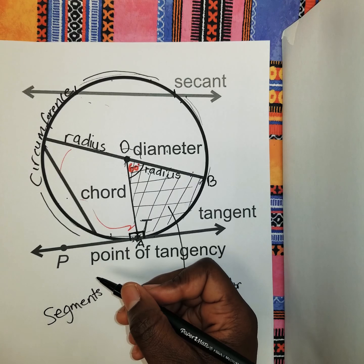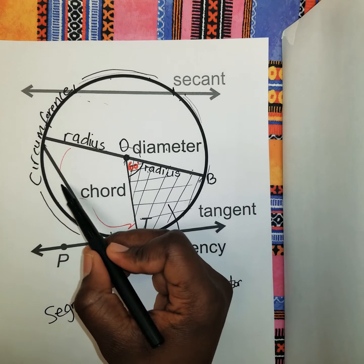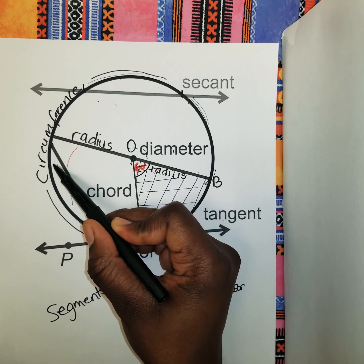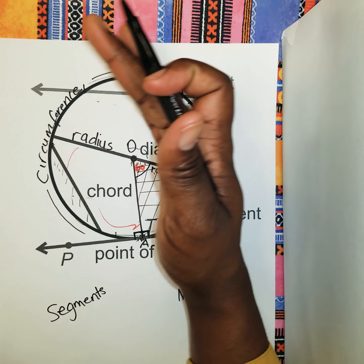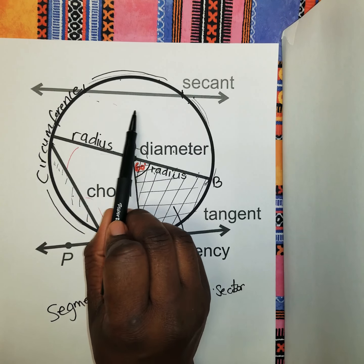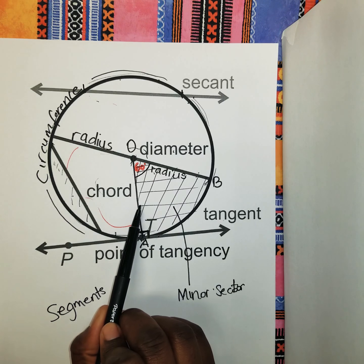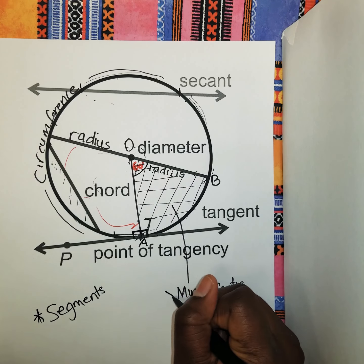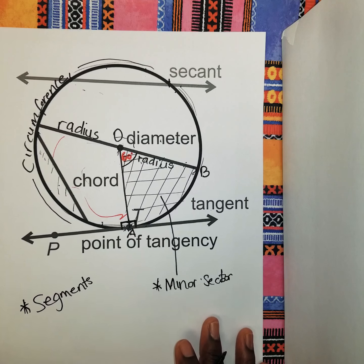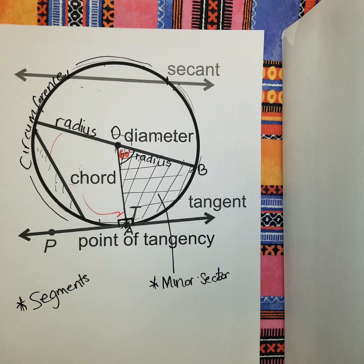Segments are normally separated by a chord. The smaller region cut off by a chord is your minor segment, and the rest of the circle is your major segment. If you think about the diameter, the region above it is one segment and below it is another segment. These are very important things to know about a circle before going into circle theorem and finding different angles or lengths within a figure.